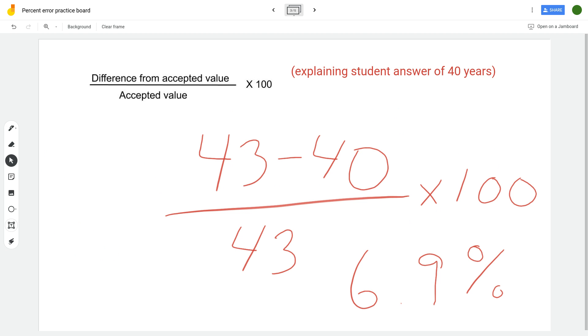Because again we're just finding the difference, there's no set number that you put first, we just need the raw difference. All right, 43 minus 40, and then we put it over the accepted value which is 43 and we multiply that by 100 and we get 6.9 percent.